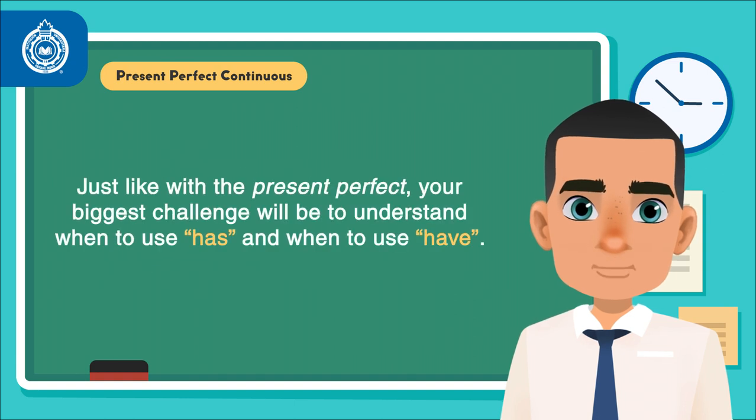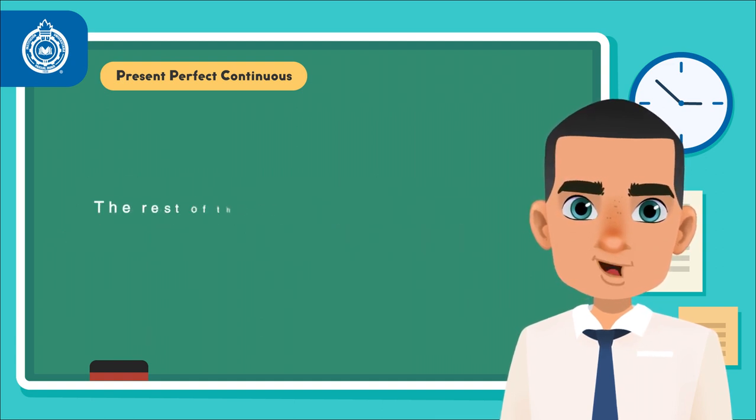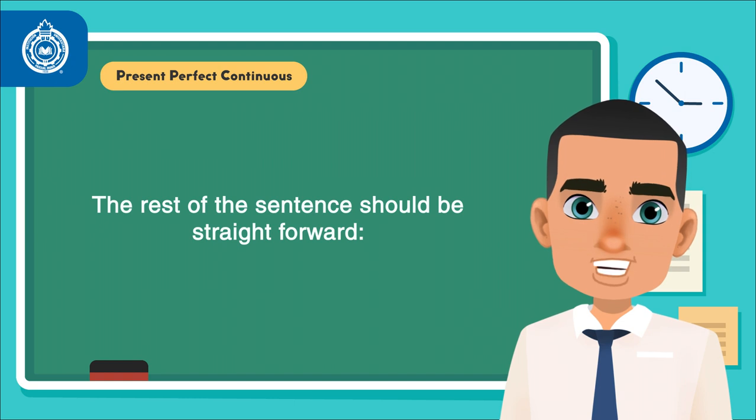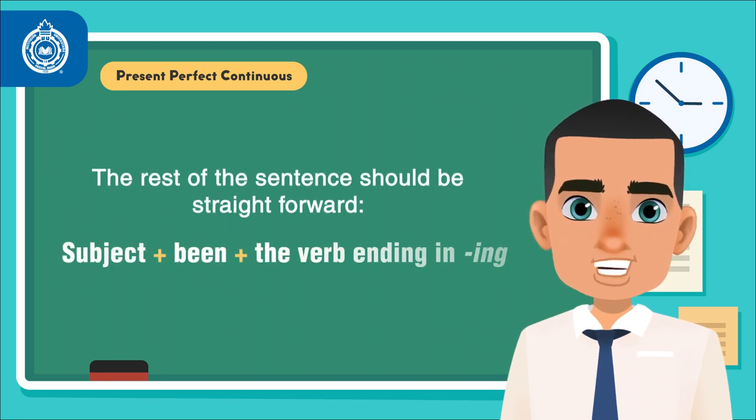Just like with the present perfect, your biggest challenge will be to understand when to use has and when to use have. The rest of the sentence should be straightforward. Subject plus been plus the verb ending in ing.